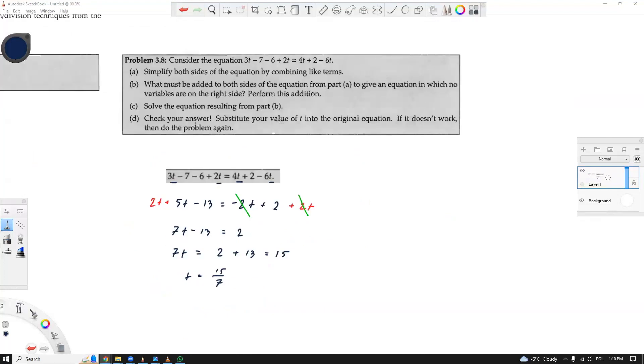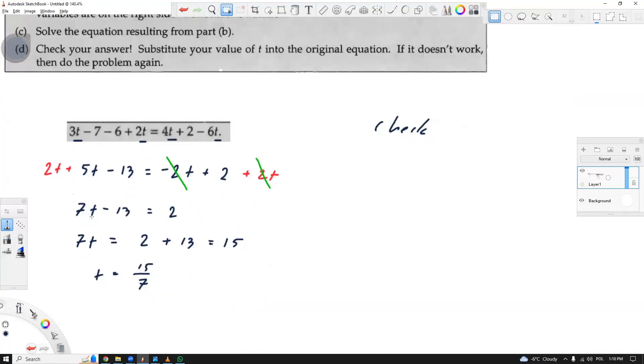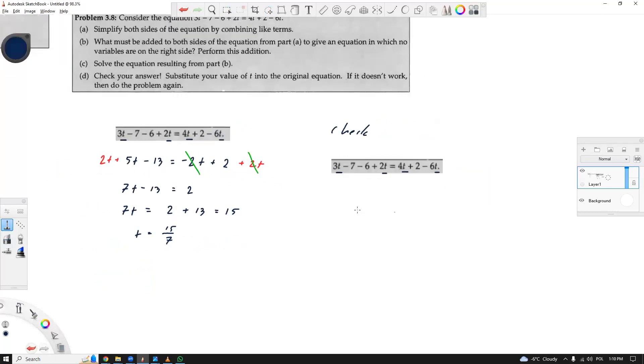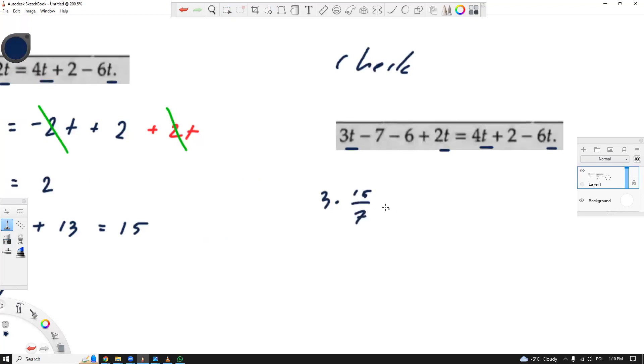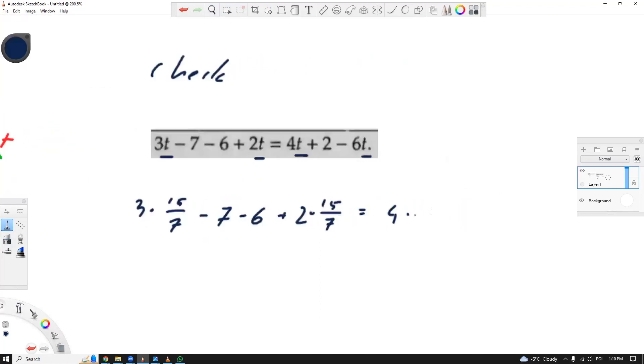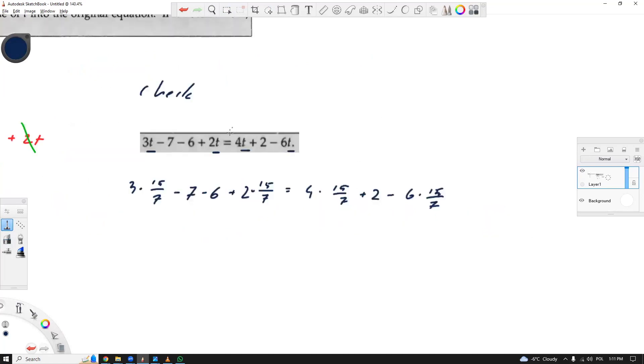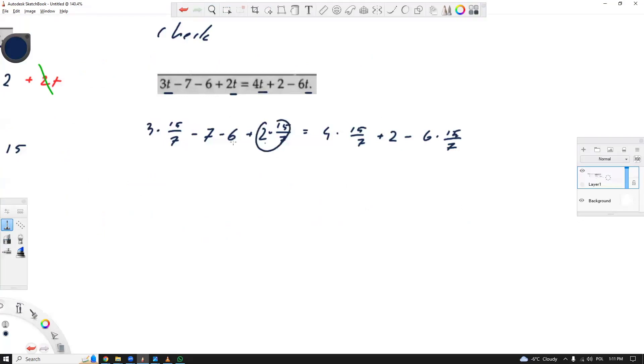Now, you can solve the equation and check your answer. So what you could do is go back and sub in. Checking just allows you to make sure that you did everything correctly. So I think this step would be good. You can either go here or you can go to the very beginning and sub everything in. So 3 times 15 over 7 minus 7 minus 6 plus 2 times 15 over 7 equals 4 times 15 over 7 plus 2 minus 6 times 15 over 7.